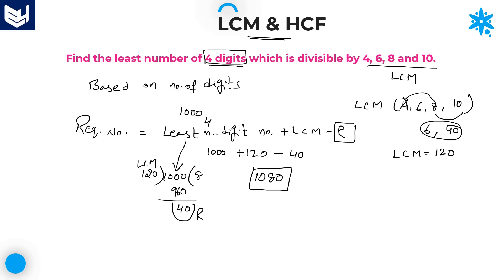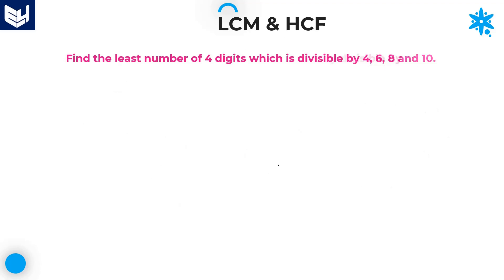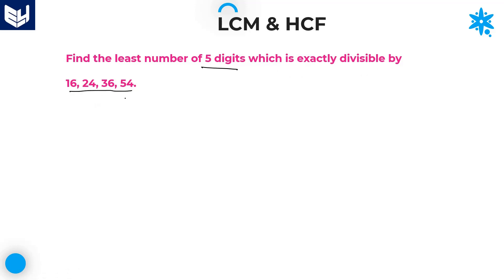1080 is the least four-digit number which is exactly divisible by all the numbers 4, 6, 8, and 10. That is the answer for this question. Let's move on to the next question — some five-digit number. Find the least number of five digits which is exactly divisible by all these numbers. Here also the same concept, based on number of digits.